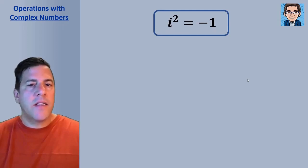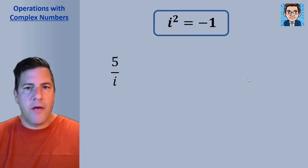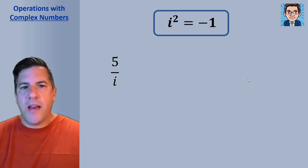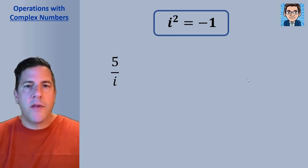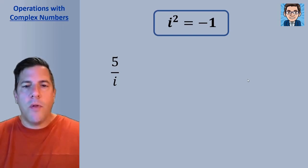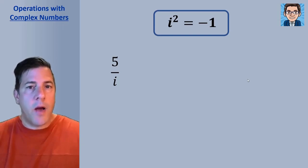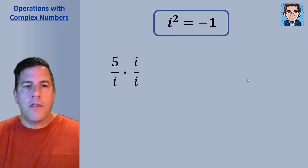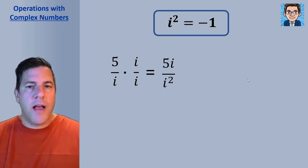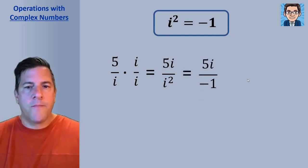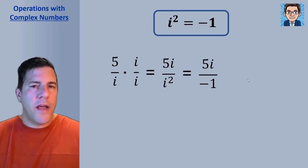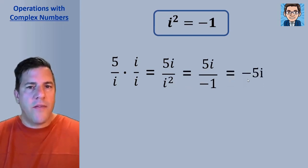If we have i in the denominator, since i is defined as a square root, we can't leave a square root in the denominator for something to be fully simplified. For 5 over i, we multiply both the numerator and denominator by i — we're multiplying by 1, so that's valid. The numerator becomes 5i and the denominator becomes i squared. We replace i squared with negative 1, so 5i over negative 1 becomes negative 5i.